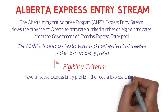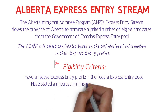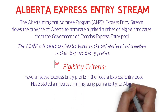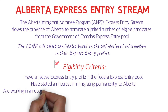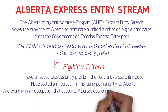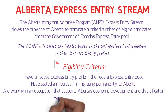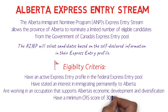The eligibility criteria are: you must have an active Express Entry profile in the federal Express Entry pool, you must have stated an interest in immigrating permanently to Alberta, you must be working in an occupation that supports Alberta's economic development and diversification, and you must have a minimum CRS score of 300.